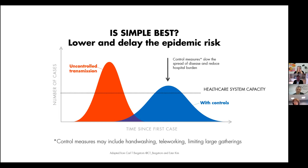This was further developed by Karl Bergstrom and Esther Kim, who introduced the concept of the flattened curve actually exceeding healthcare capacity. They have very clear symbols on the graphs and indicate that control measures slow down the spread. There's a clear title on the graph, lots of use of white space, and they further explain what control measures include — handwashing, teleworking, etc. So there's a bit more context, more information, and more reflection of the facts.